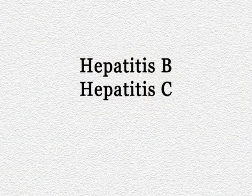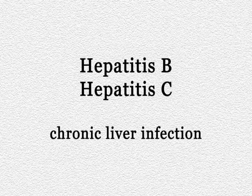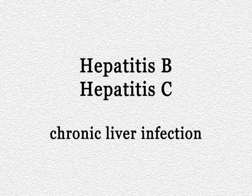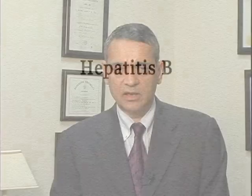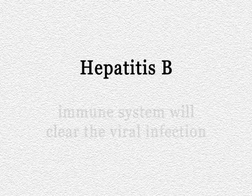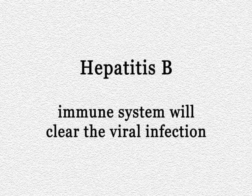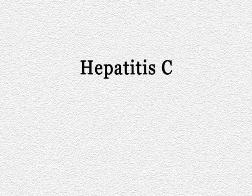Hepatitis B and C are viruses that can result in a chronic liver infection. Why they home in on the liver is not absolutely known, but they do cause long-term problems. Initially they elicit a response from the immune system, which reacts to the presence of the virus in the liver cells. In most patients with hepatitis B infection, the immune system will actually clear the viral infection, and the patient develops antibodies and is essentially unlikely to have chronic liver infection subsequently.